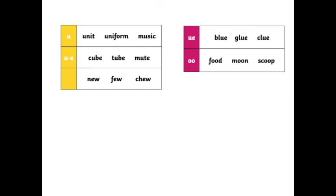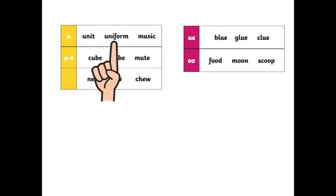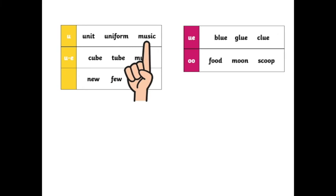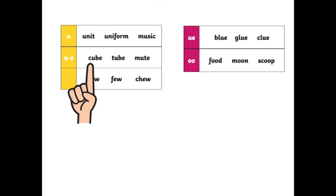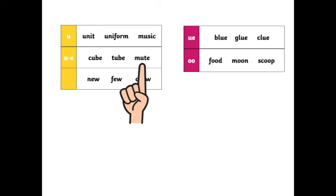These words contain U — are you ready to read with me? These contain U, so we have U and U here. Unit. U-N-I: Uniform. M-U-S-I-C: Music. Let's go down to the split U. U-B: Cube. T-U-B: Tube. N-U-T: Mute.